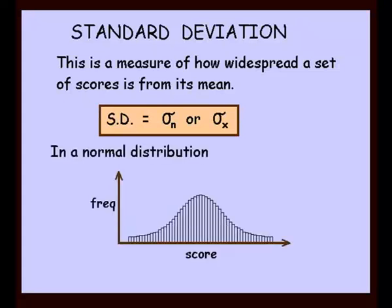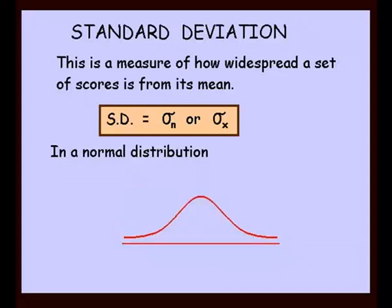Now in a normal distribution where the score and frequency is labeled, if we draw a curve, it would be known as a bell curve. So in a normal distribution we come up with that bell curve. If we consider an example where the mean is 60, recall the mean symbol is that x with a bar across it, that's the mean.